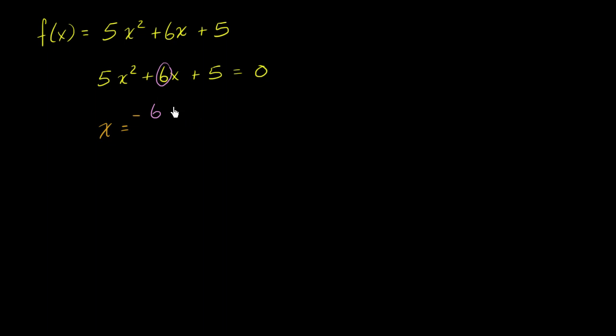plus or minus the square root of b squared minus 4 times a times c, all of that over 2 times a.